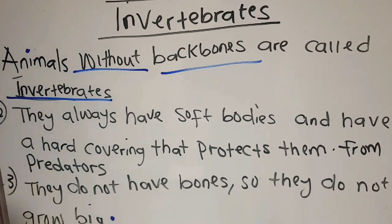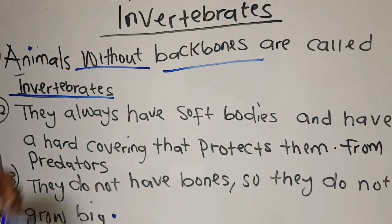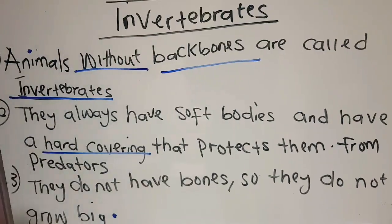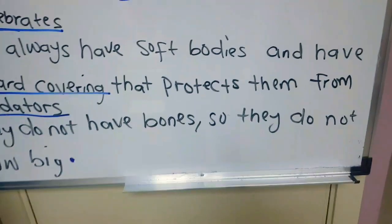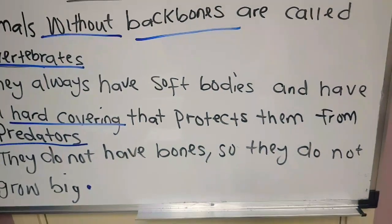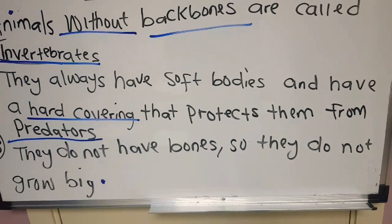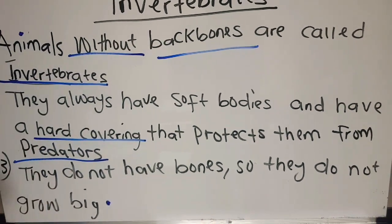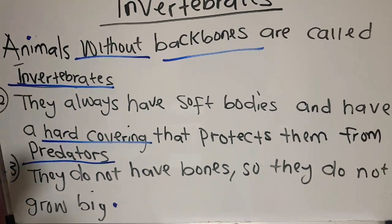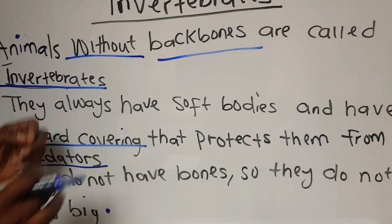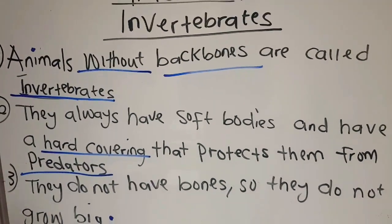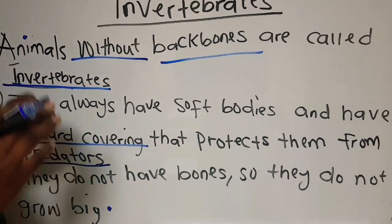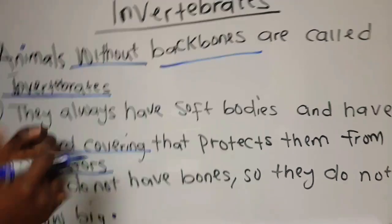Most of the invertebrates always have soft bodies, and they also have a hard covering that protects them from the predator. Number three, they do not have bones, so they do not grow big. In the last lesson, I told you that vertebrates always have bones and they grow so big. Now, these invertebrates, they do not have bones and they do not grow so big.